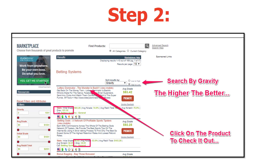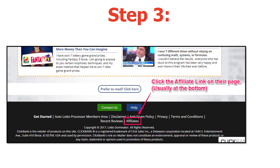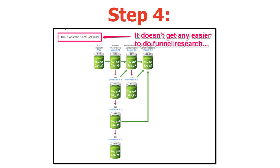All you have to do is click on a product to check it out. Step three is that you go into any one of these products, usually scroll down to the bottom of the page, and you're going to be looking for an item that says 'Affiliates.' Click on that, and then step four is going to take you inside and give you information literally about their sales funnel.